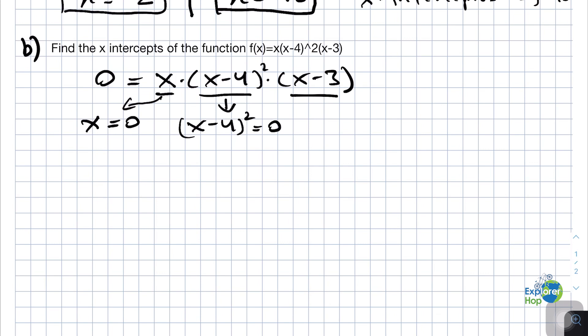We can take the square root on both sides, which gives us x-4 equals 0. This will give us x equals 4.